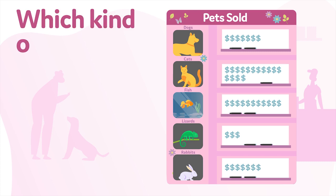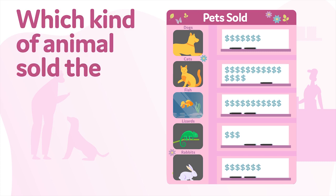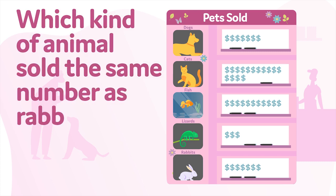Which kind of animal sold the same number as rabbits? The dog row shows the same number of dollar signs as the rabbit row. The pet store sold the same number of both kinds of animals — seven.